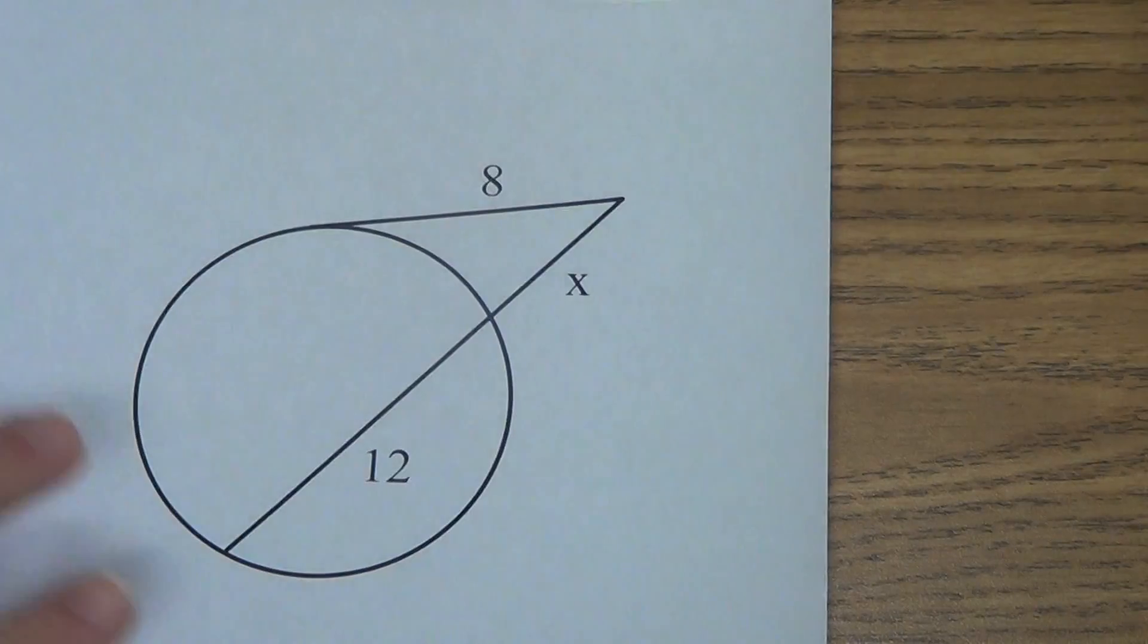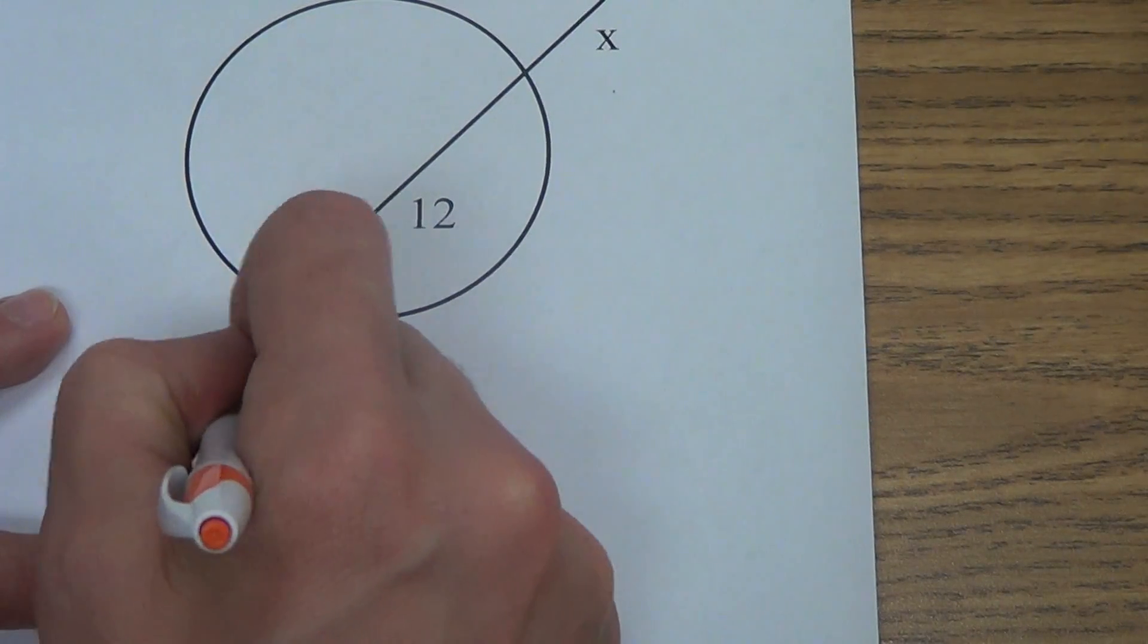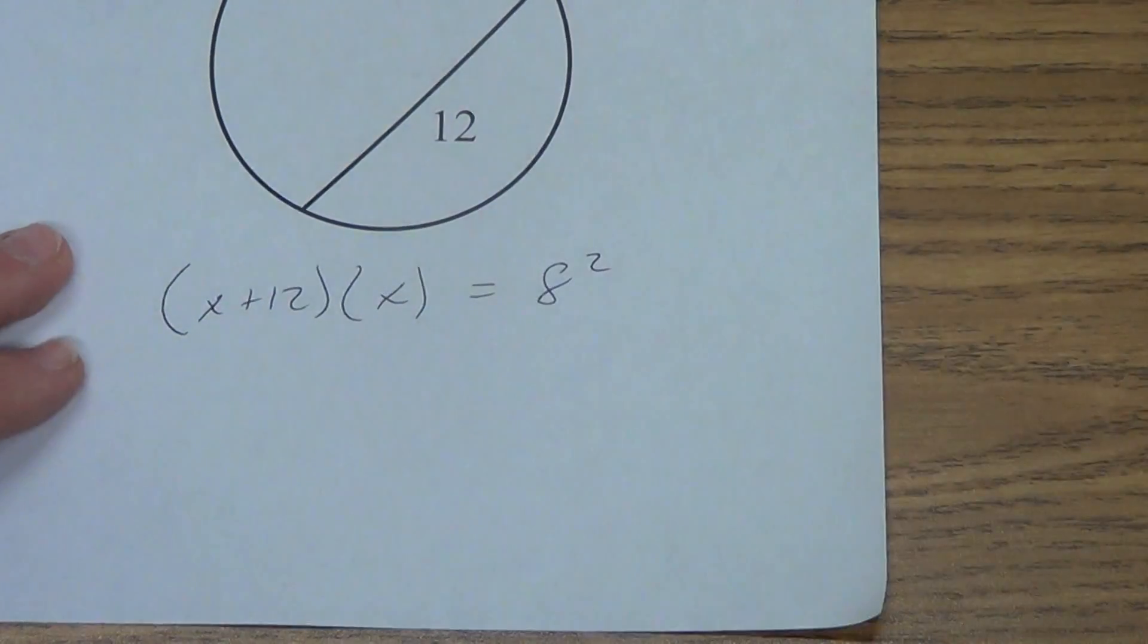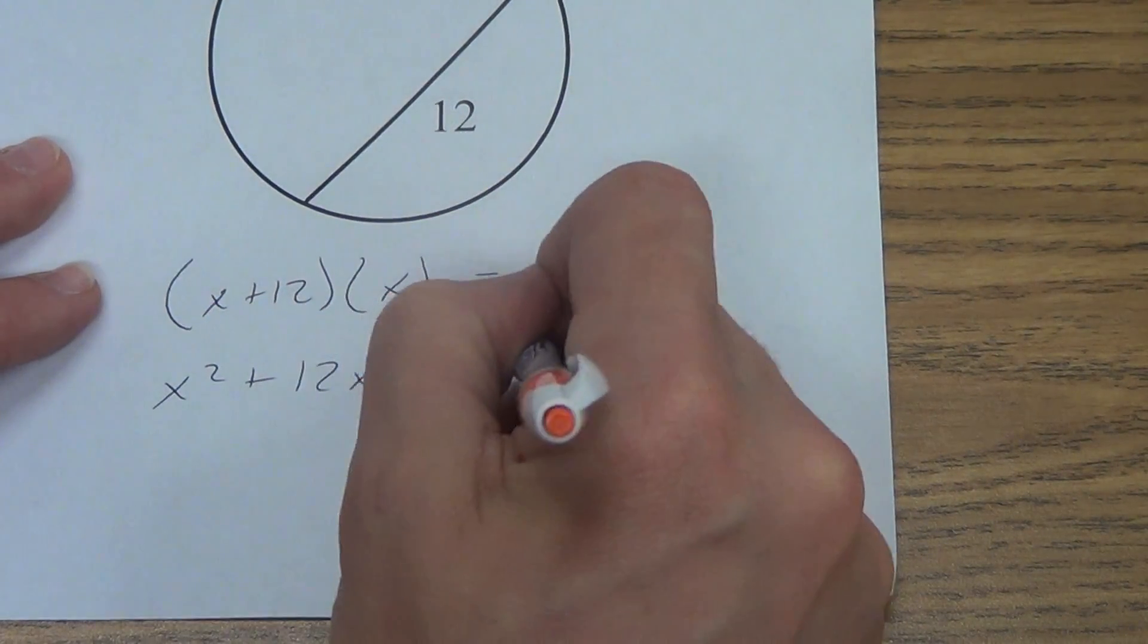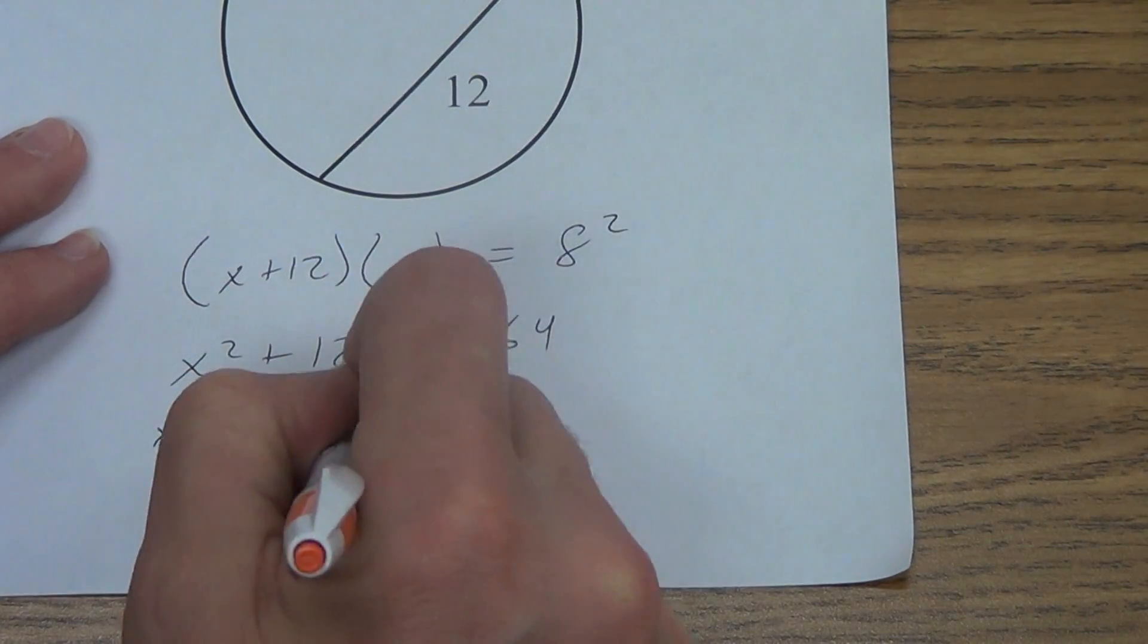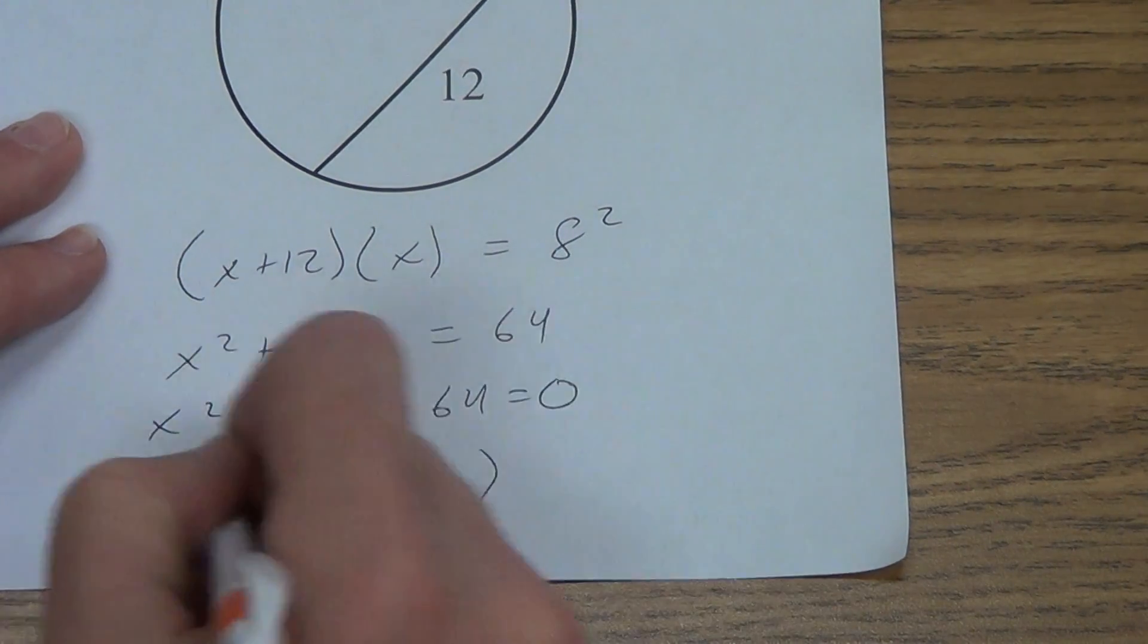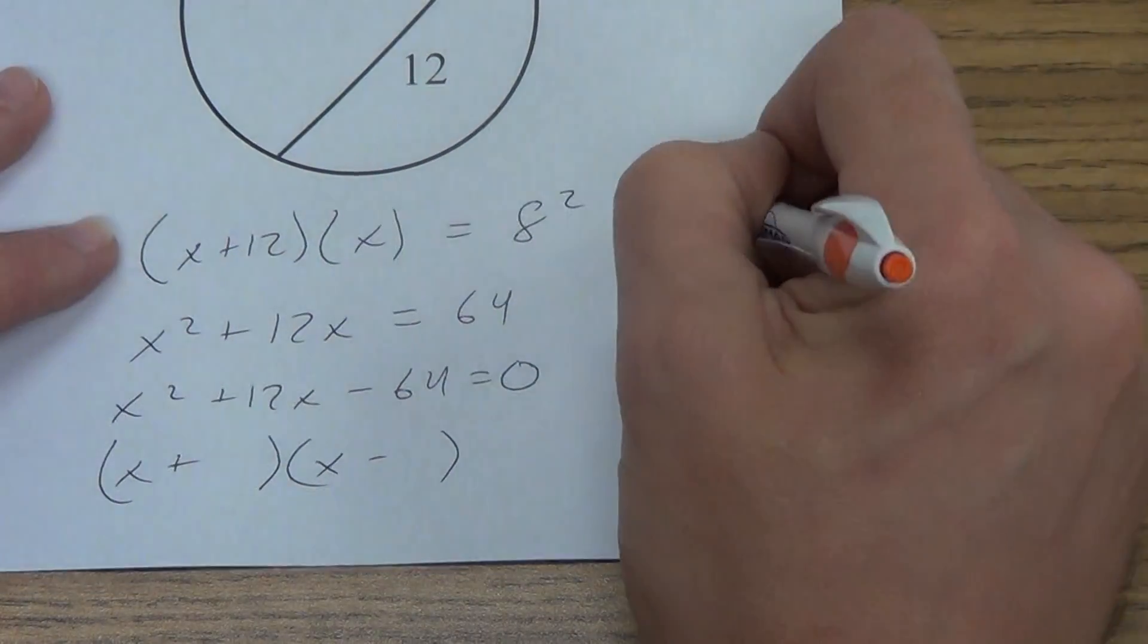Last one. X is outside. Anytime the X is outside, it gets a little harder. Whole thing, X plus 12. External part, X. Equals 8 squared. X squared plus 12X equals 64. Bring the 64 over by subtracting. Got to factor it. X, X, plus and minus, because I multiply positive and negative, it gives me a negative answer.